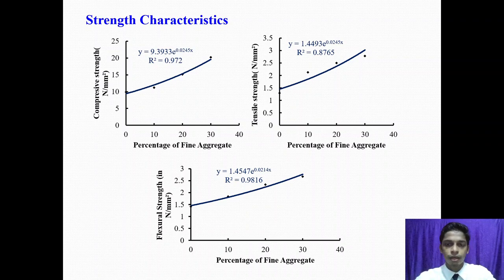As compressive strength varies from 9 MPa to 20 MPa, tensile strength varies from 1.3 MPa to 2.8 MPa, and flexural strength varies from 1.4 MPa to 2.6 MPa. This happened due to addition of fine aggregate, which reduces the void content of the concrete, and creates more bond between the aggregate to carry more load.